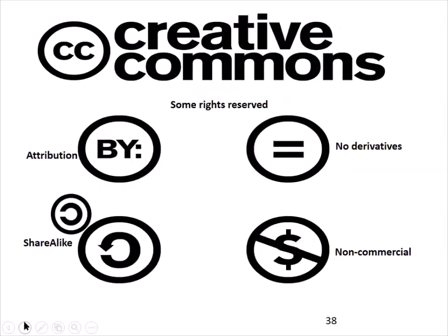With Creative Commons, stick to the two open licenses on the left: Creative Commons Attribution or Creative Commons Attribution ShareAlike. The no-derivatives license means they can't change it, which creates problems for education. Non-commercial creates problems because there are so many different versions of non-commercial in so many countries, making it very difficult for others to make use of the content.